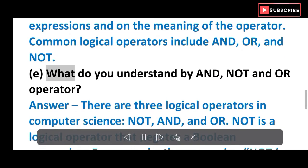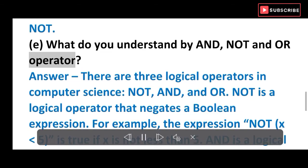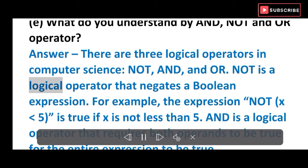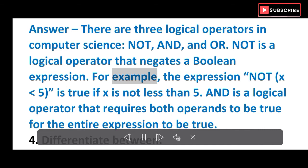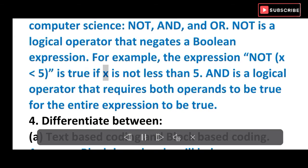(e) What do you understand by AND, NOT, and OR operator? Answer: There are three logical operators in computer science: NOT, AND, and OR. NOT is a logical operator that negates a boolean expression. For example, the expression NOT x less than 5 is true if x is not less than 5. AND is a logical operator that requires both operands to be true for the entire expression to be true.